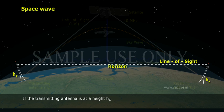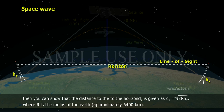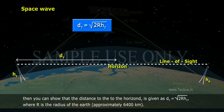If the transmitting antenna is at a height ht, then you can show that the distance to the horizon dt is given as dt equals square root of 2Rht, where R is the radius of the earth, approximately 6400 kilometers.